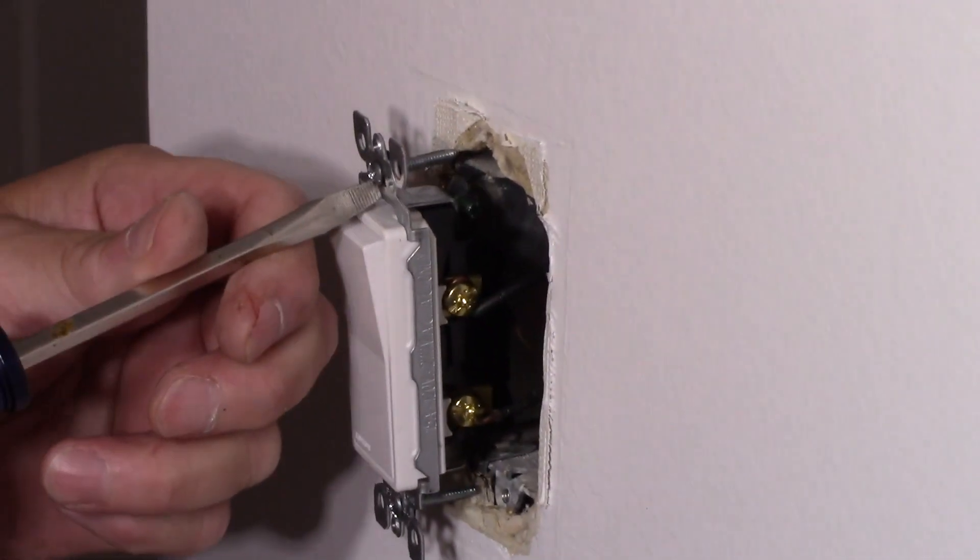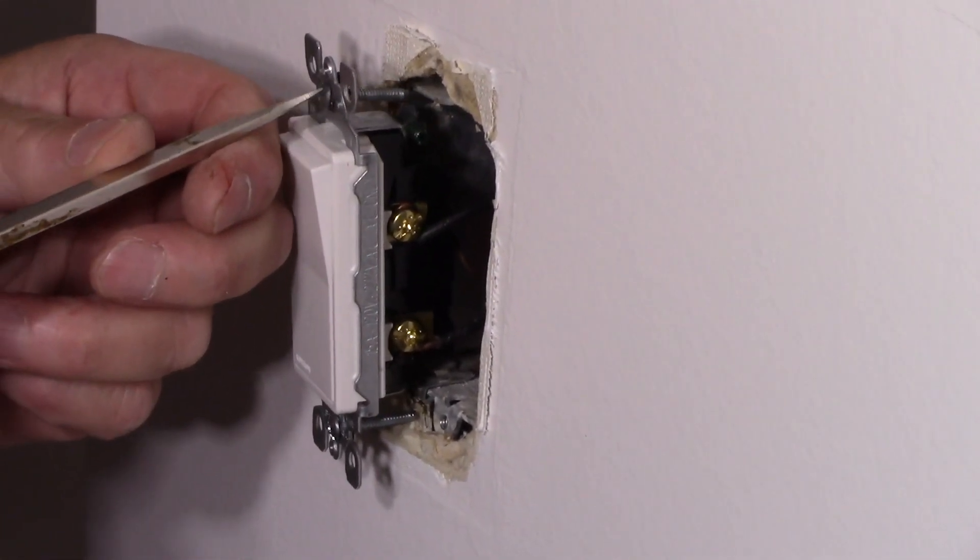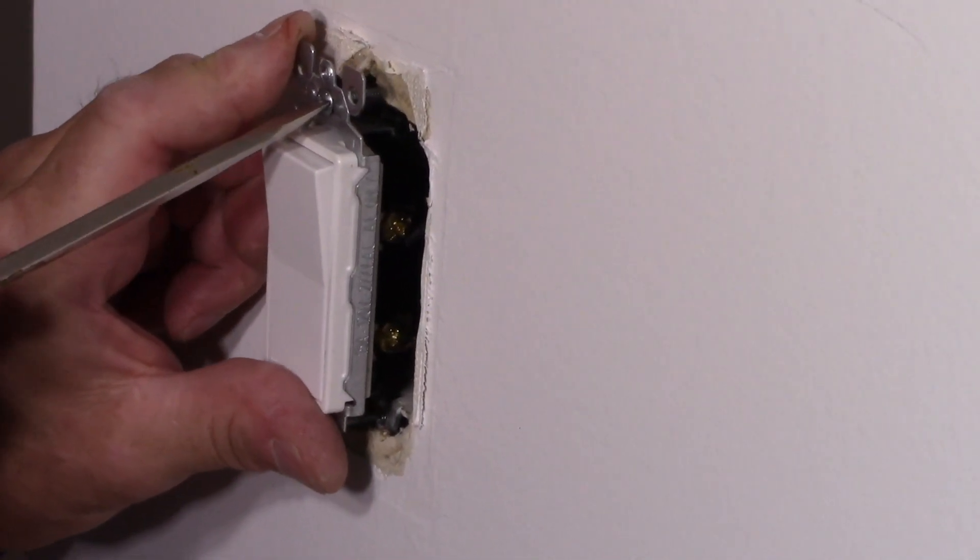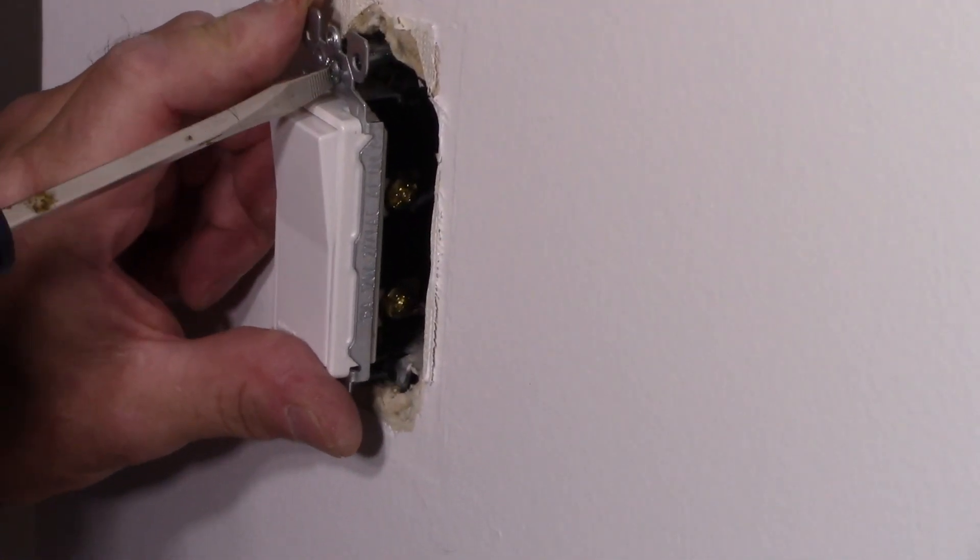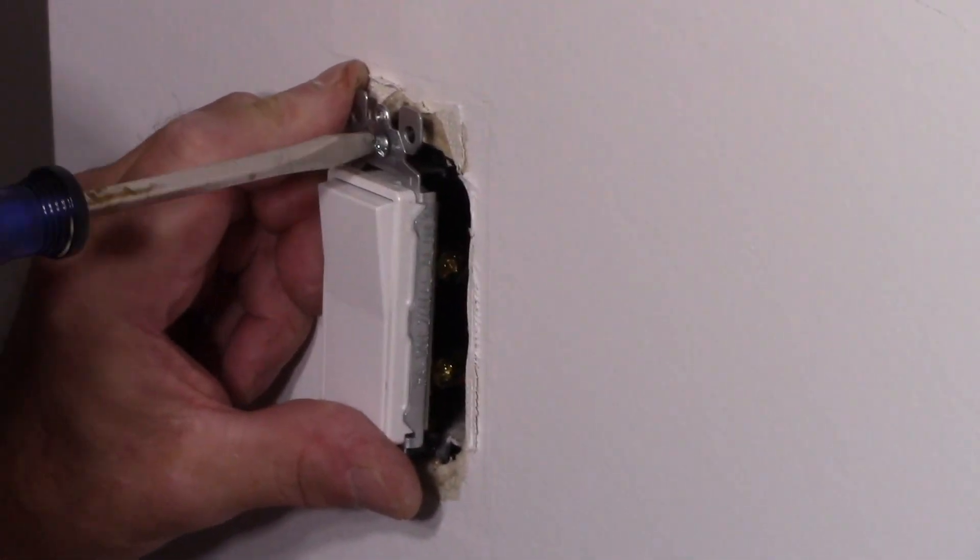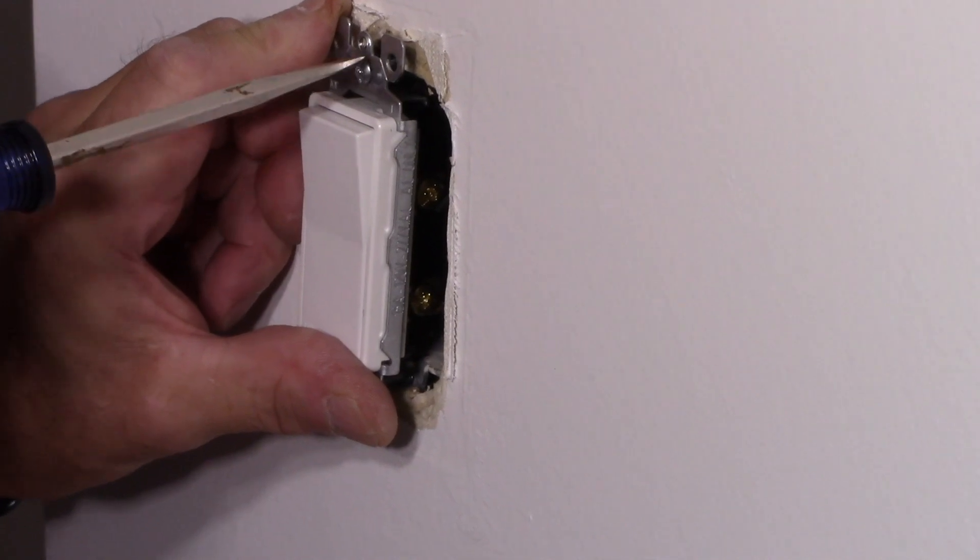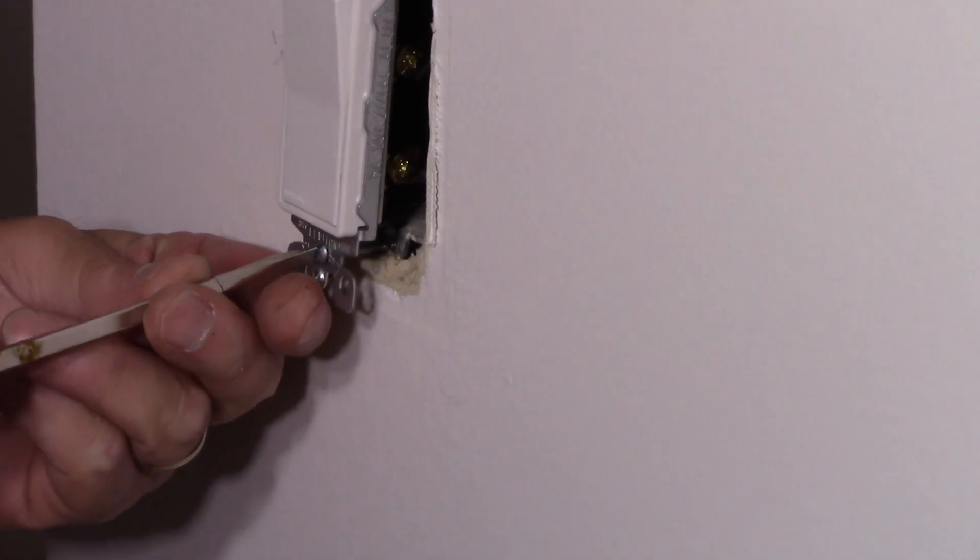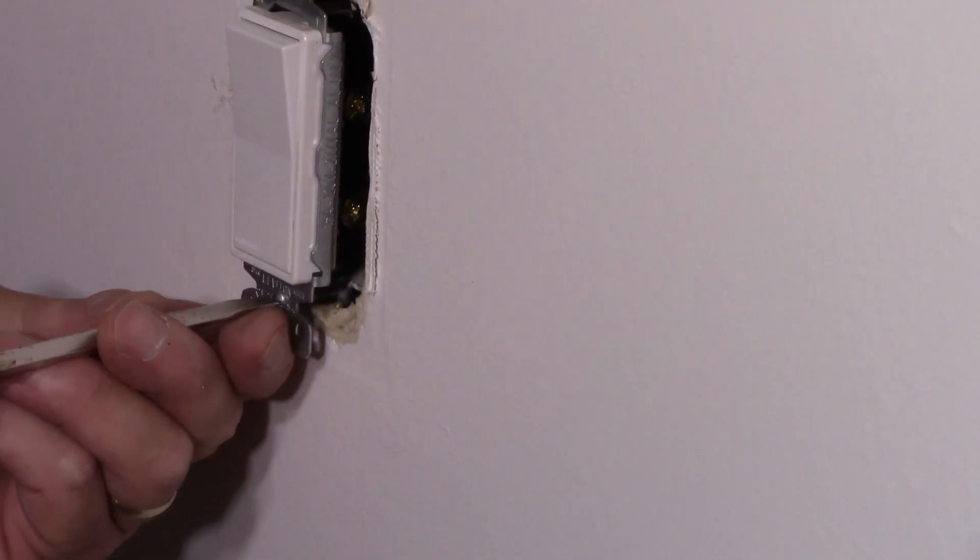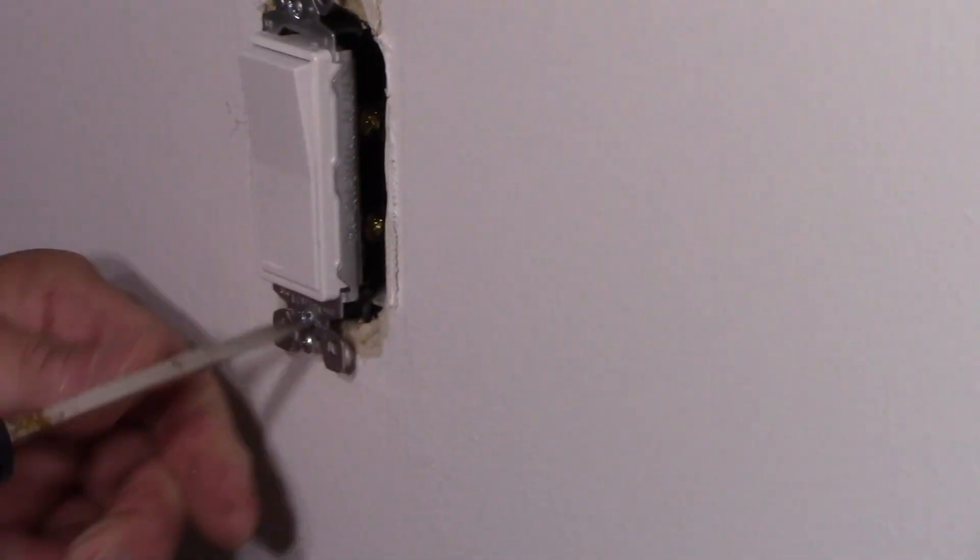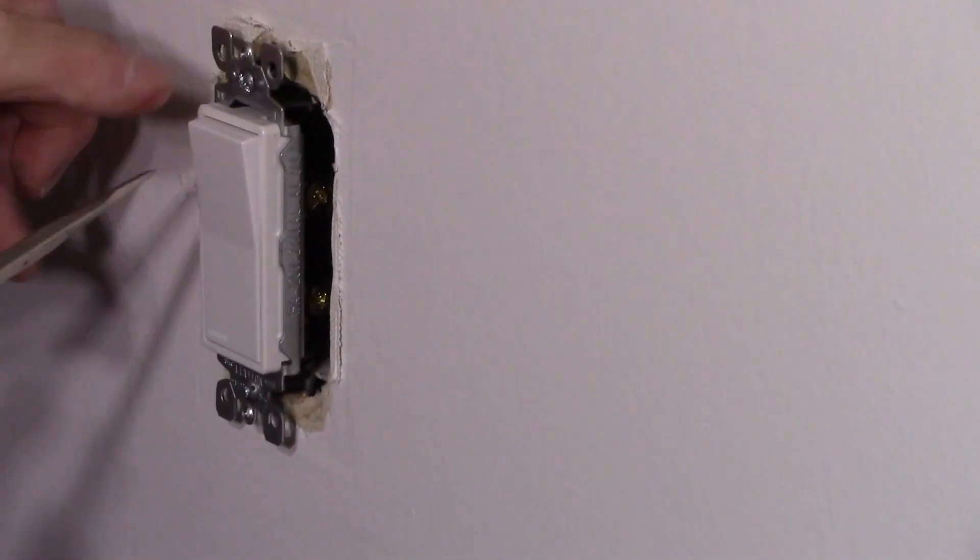And now we're going to catch these screws into the box that's in the wall. And then before you tighten it down we'll catch the one screw and then we'll get the second one in like that. And now we'll screw it down just till these pieces touch the wall itself.